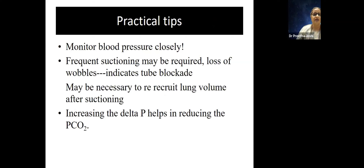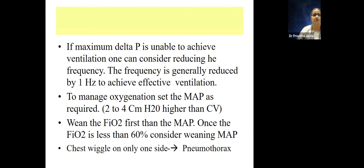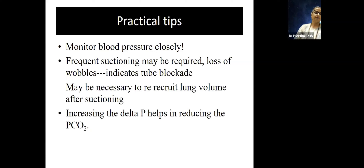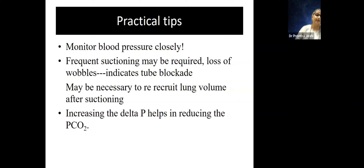In Q&A: the air-leak strategy uses lower MAPs because higher MAP causes more air leaks. So in air-trapping syndromes — bronchiolitis, asthma, CDH — always start with lower MAPs, as low as 8 cmH2O in CDH.